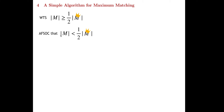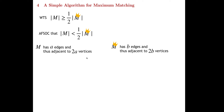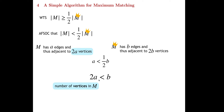To make this concrete, assign numbers: if matching M has A edges, it has 2A vertices, since edges in a matching share no vertices. Similarly, M-crown has B edges and 2B vertices. The contradiction assumption gives us A is less than one-half B, which is the same as saying 2A is less than B. This means the number of vertices in M is less than the number of edges in M-crown.